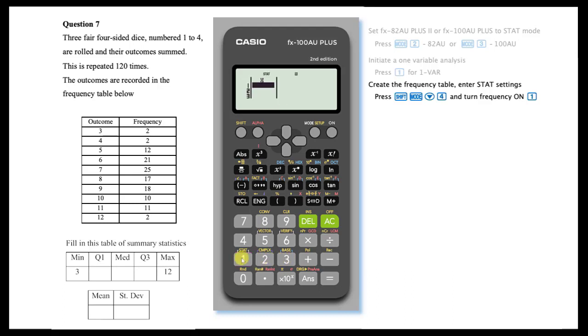To enter data in the form of a frequency table, enter the statistics settings by pressing SHIFT, then MODE, then ARROW DOWN, and select STAT by pressing 4.